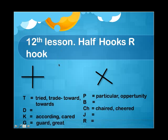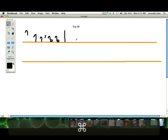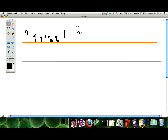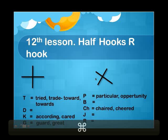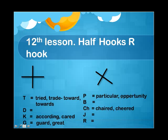The next one is for P: 'particular' and 'opportunity'. Particular will be above the line; opportunity will be on the line. You can remember it like adjective and noun — particular opportunity. So the first one will be above the line, the second one will be on the line. Similarly: tried is above the line; toward and trade are on the line.